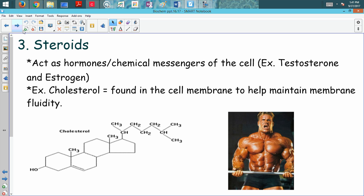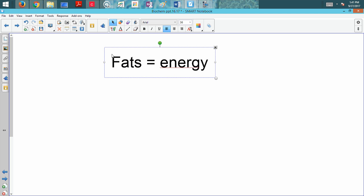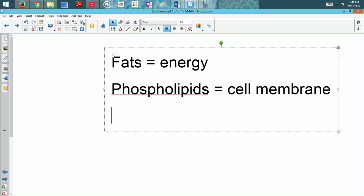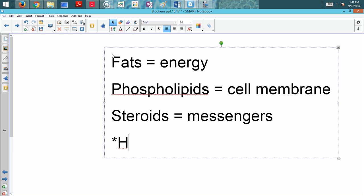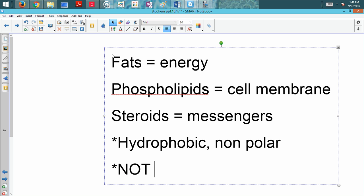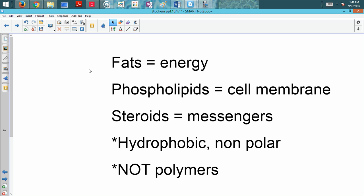Just to summarize here, we had three different types of lipids. We had our fats, which are used for energy. We had our phospholipids, which are used for the cell membrane. And we had our steroids, which are used for messengers. Something that they all have in common is that they're primarily hydrophobic and nonpolar. But they're not polymers because they're not made up of the same type of monomers. Those are the fats. Make sure you've filled in everything into your notes. That's the end of this little mini lecture.